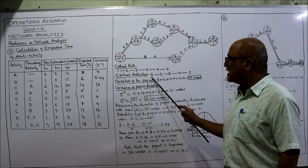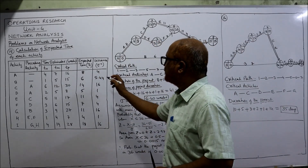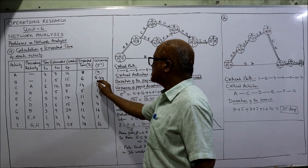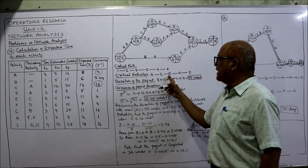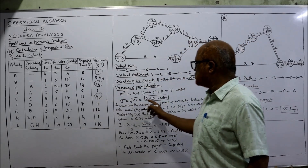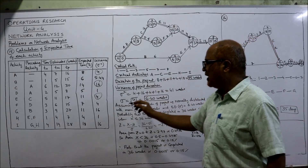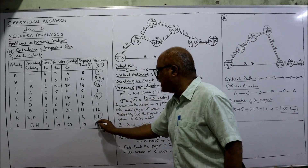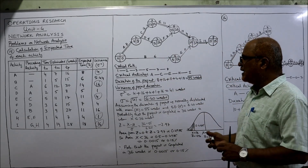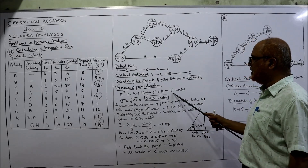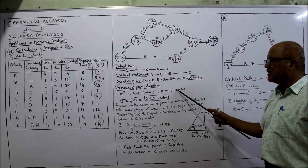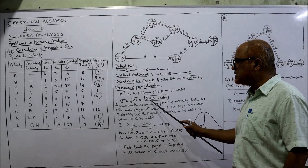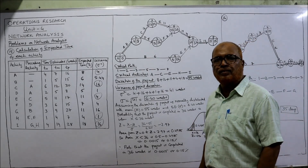For variance, we take the variances of the critical activities only. Variance of A = 4, variance of C = 16, variance of E = 4. Adding the variances of all critical activities (A, C, E, H, I) gives a total variance of 41 weeks. The standard deviation is the square root of the variance: √41 = 6.40 weeks.